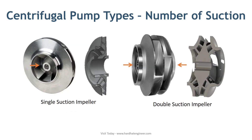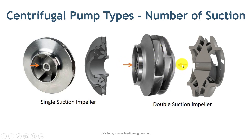Based on the number of suctions, a centrifugal pump can be single or double suction type. Most centrifugal pumps have a single suction design. However, when the flow rate is very high, single suction is not enough, so double suction pumps are used. The impeller of this type is designed so that liquid enters from both sides of the impeller, compared to a single side in the normal case. Even in a double suction pump, you have a single suction and discharge flange — it is the design of the impeller and casing that differs.